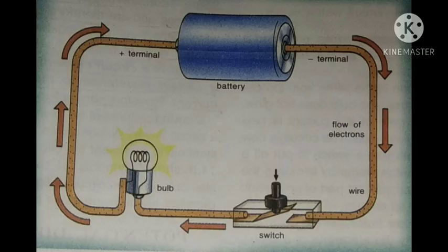Next, let us see one activity. You can see in the figure an electric cell or battery is connected to a bulb using copper wires. The bulb lights up because an electric current flows from the positive terminal of the cell through the wires and the bulb to the negative terminal of the cell.